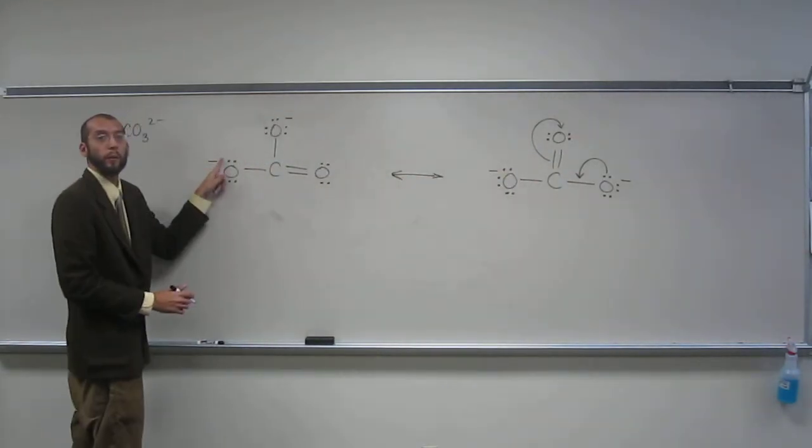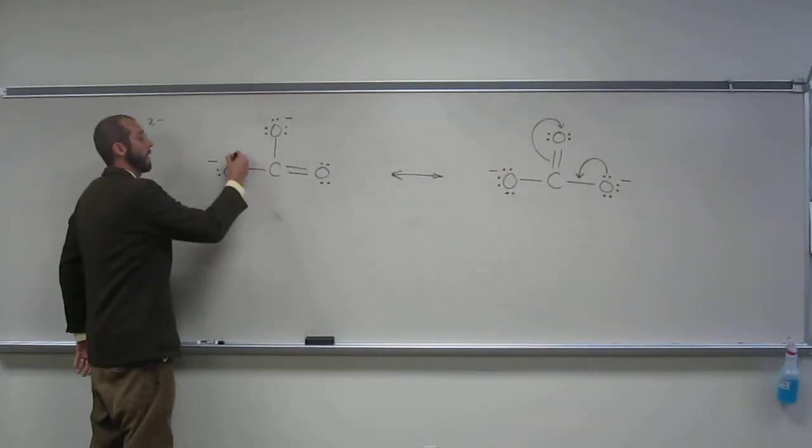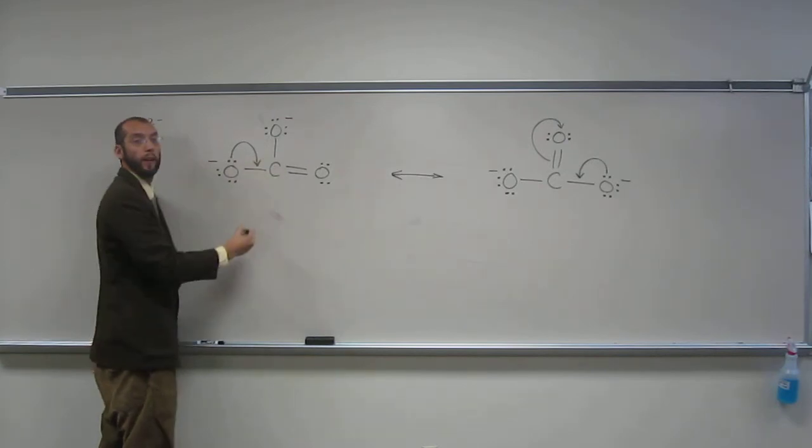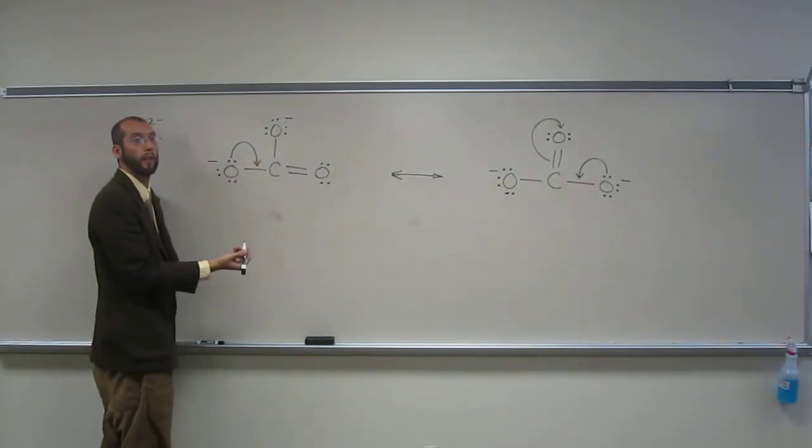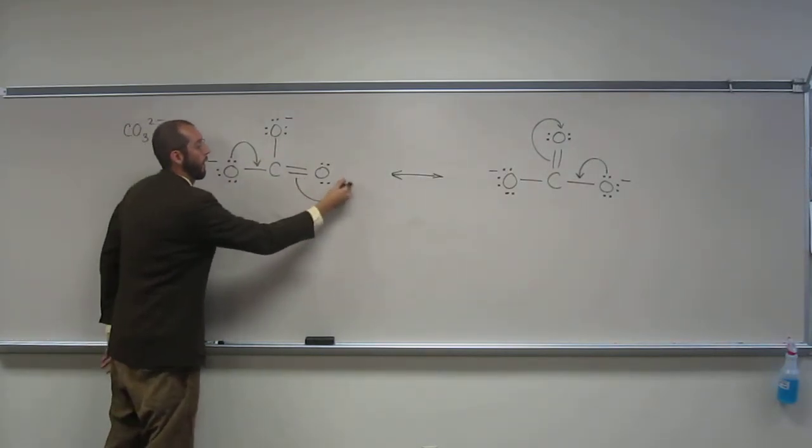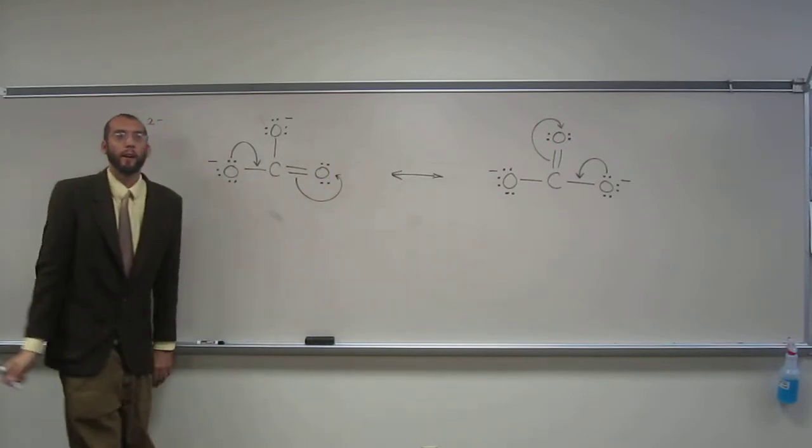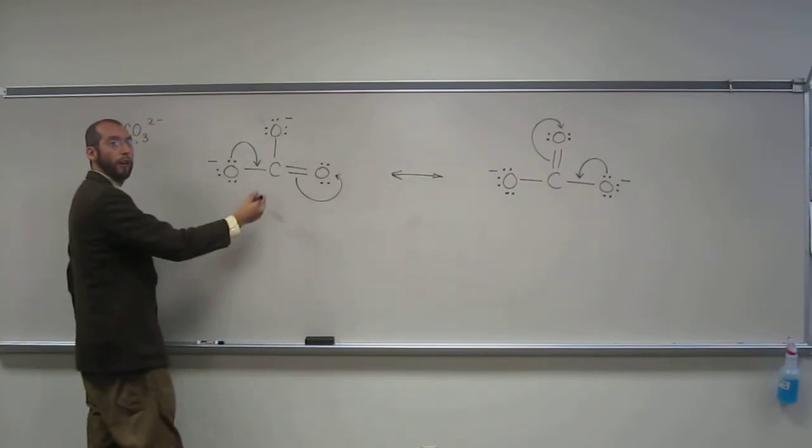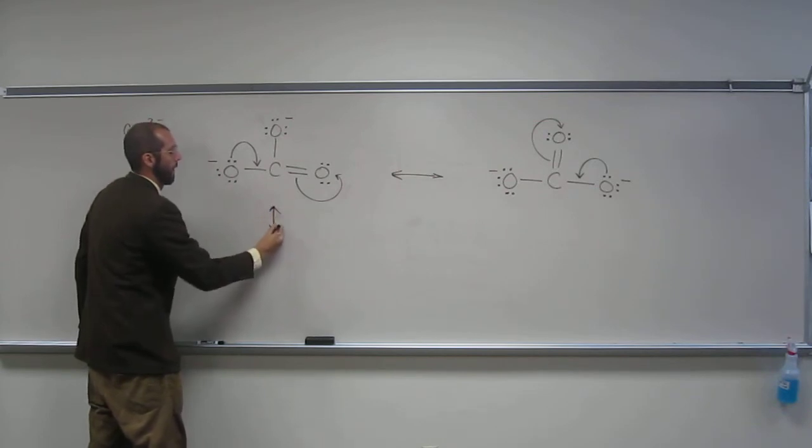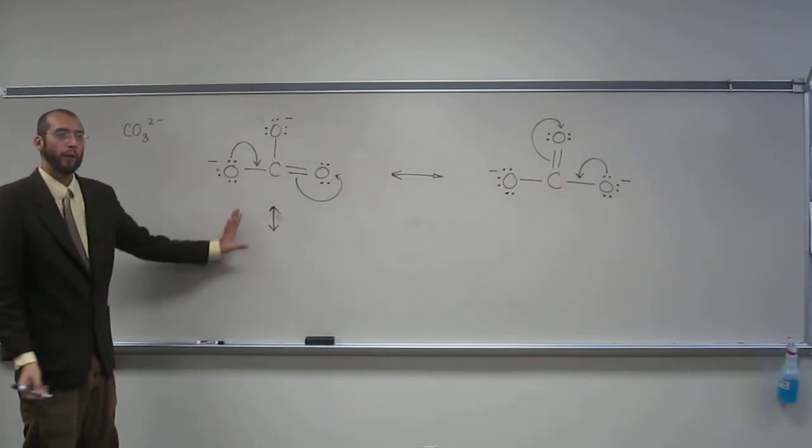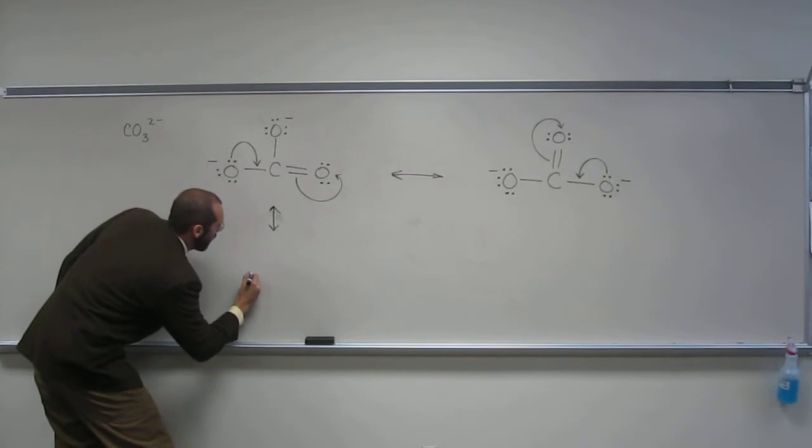So if we start from here, what would we do? Take this there, and then anything else? The double bond. Like that, right? And let's draw our resonance arrow. Like that. Everybody okay?